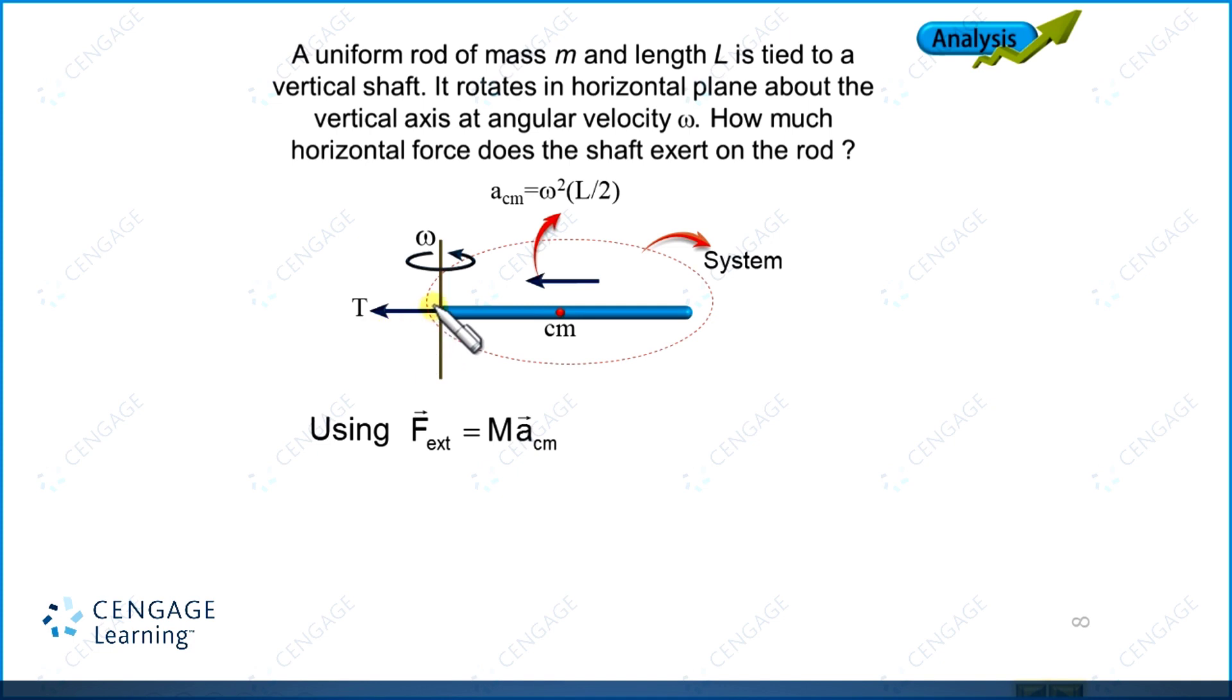F external is nothing but capital T in the leftward direction. Acceleration, as we discussed, is again in the leftward direction. So here we can write capital T equal to M multiplied by omega square L by 2. This is the force exerted by shaft on the rod. This is the horizontal force: one-half M omega square L.